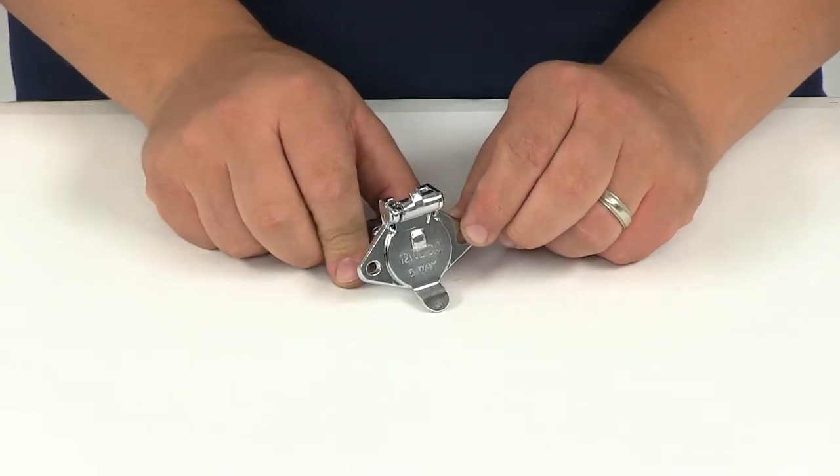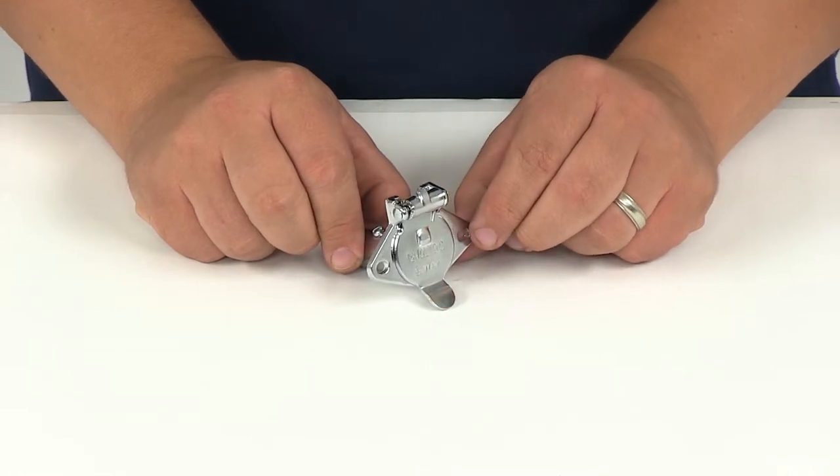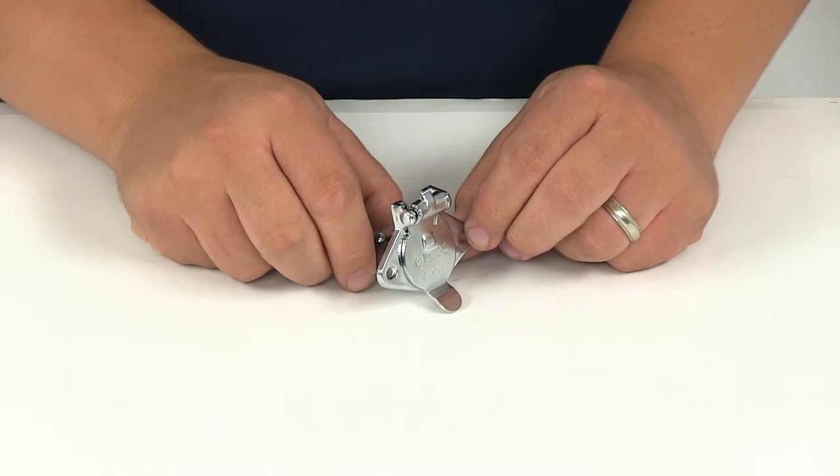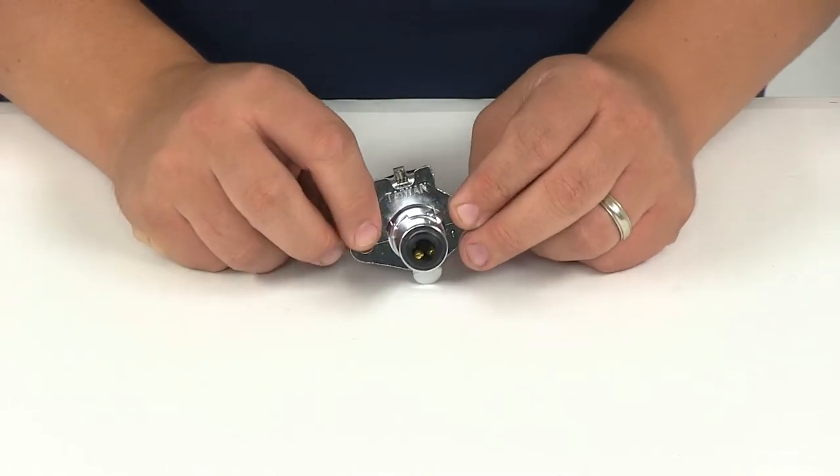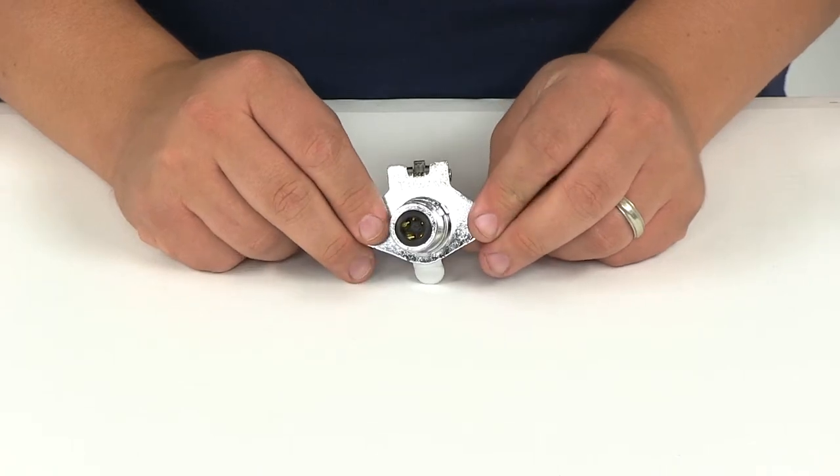For the wire configuration: white wire is your ground, green is for right turn and brake lights, yellow is for left turn and brake lights, red is for your auxiliary, and brown is for your tail lights.